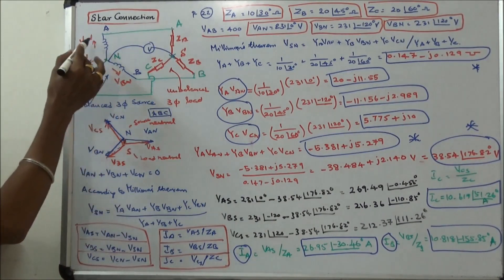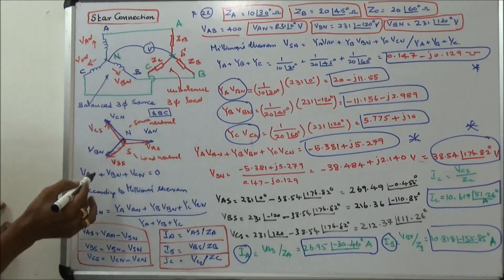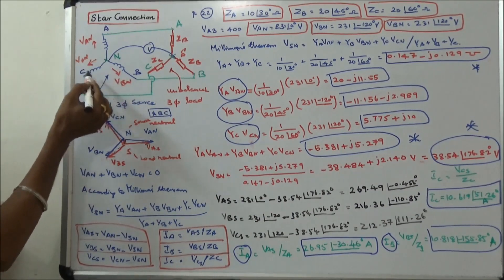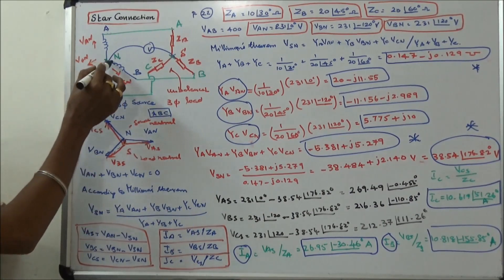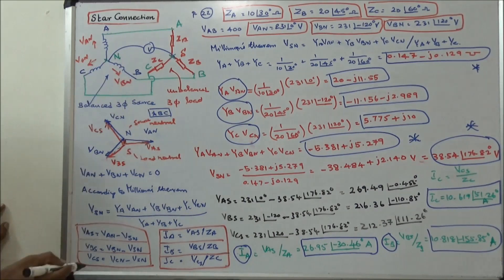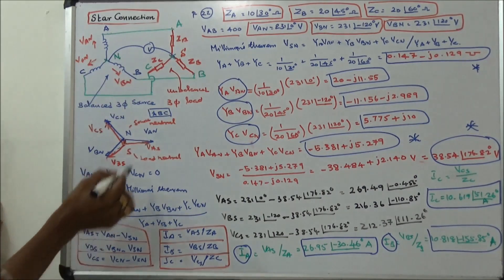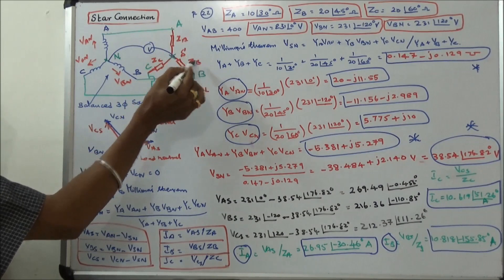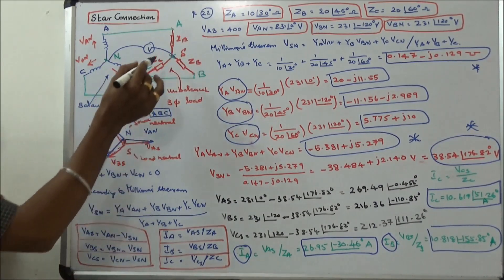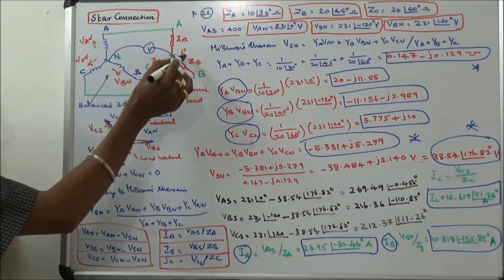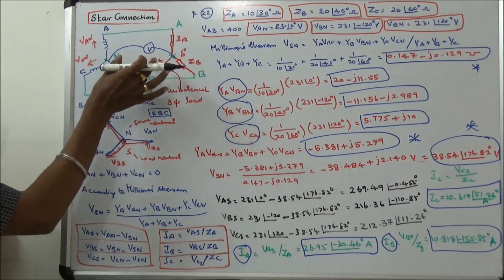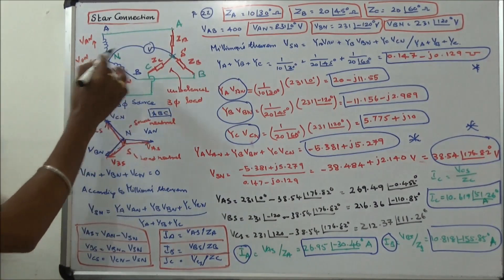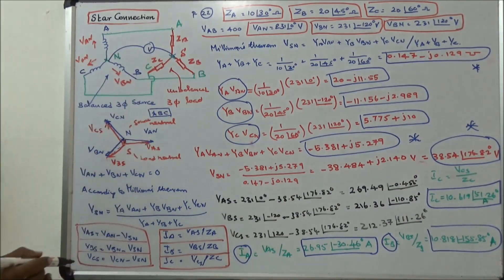This is the balanced three-phase source with voltages VAN, VBN, and VCN. The source neutral is N. On the load side we have an unbalanced load with impedances ZA, ZB, and ZC. The load neutral is S. We need to calculate VSN, the voltage between the two neutrals.